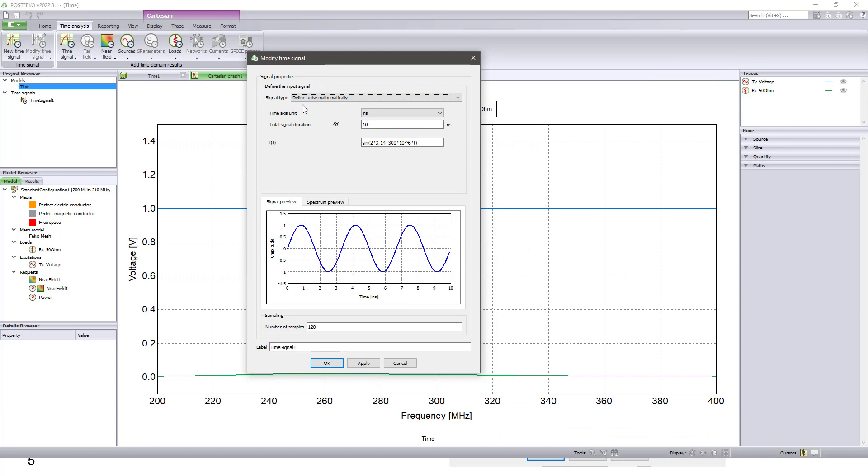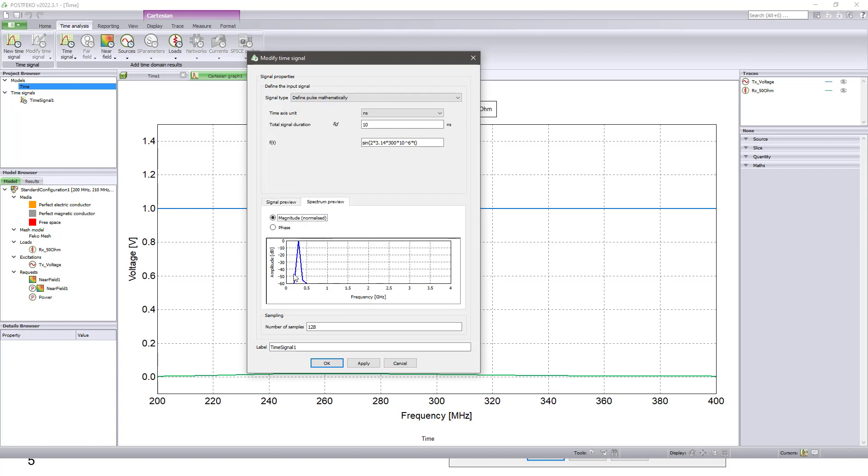As I said before, this signal type is mathematical time signal. Time axis is nanosecond. Total duration is 10 nanosecond. And F(t) is defined by using sinusoidal wave function. And this is the time signal. And this is the frequency domain signal.